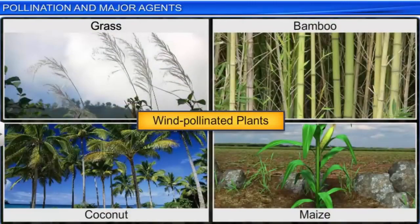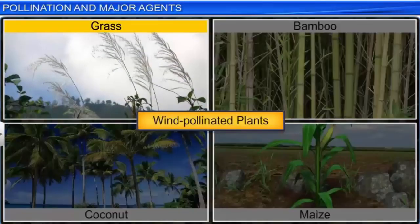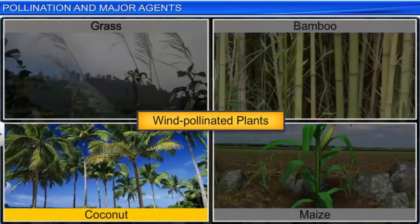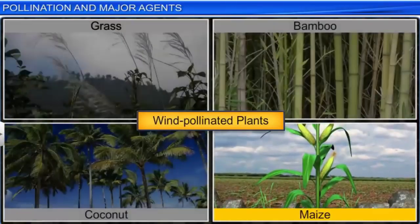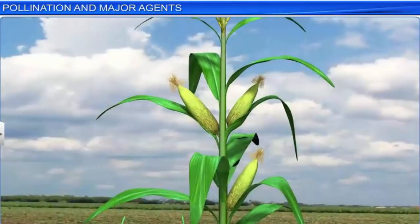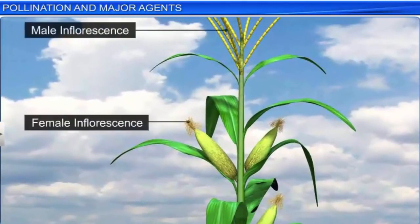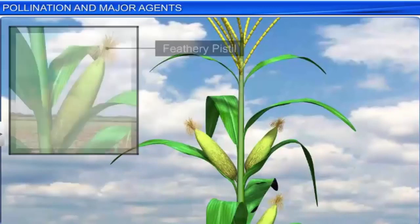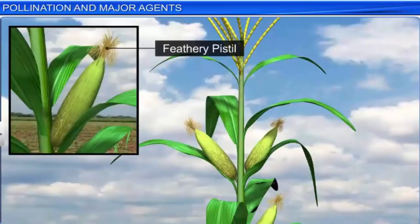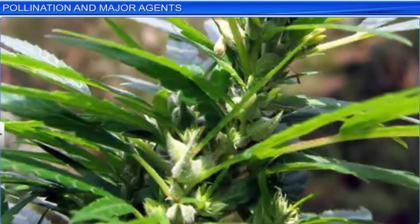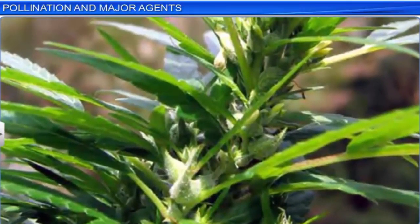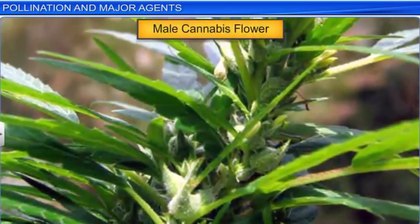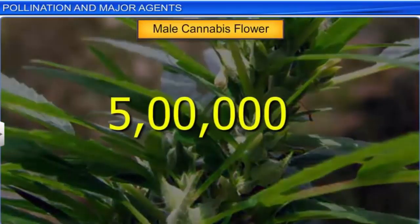Wind pollination also occurs in terrestrial plants such as grass, bamboo, coconut, and maize. These plants possess a compact inflorescence with well-exposed stamens that allow easy dispersal of pollen, and a large feathery pistil which makes it easy to trap pollen. The pollen, which is light and non-sticky, is produced in large quantities. A single flower of cannabis, for instance, produces 5 lakh pollen grains to compensate the loss of pollen associated with wind pollination.